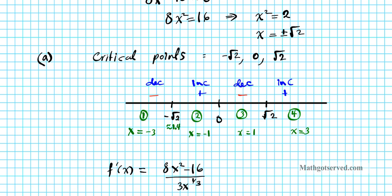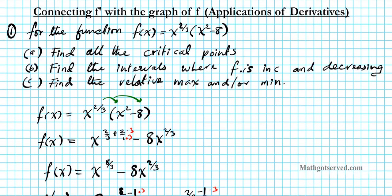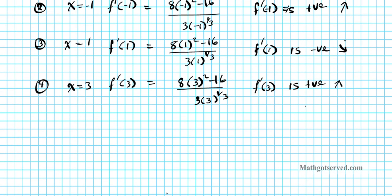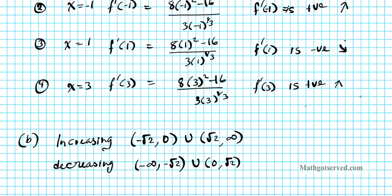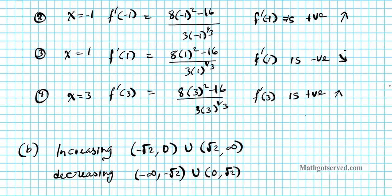So here are the intervals: f is increasing on (−√2, 0) and (√2, ∞). f is decreasing on (−∞, −√2) and (0, √2). These are the intervals where the function is increasing and decreasing.